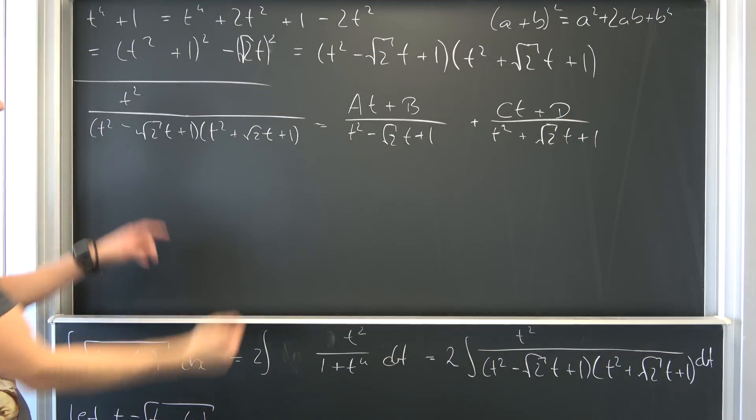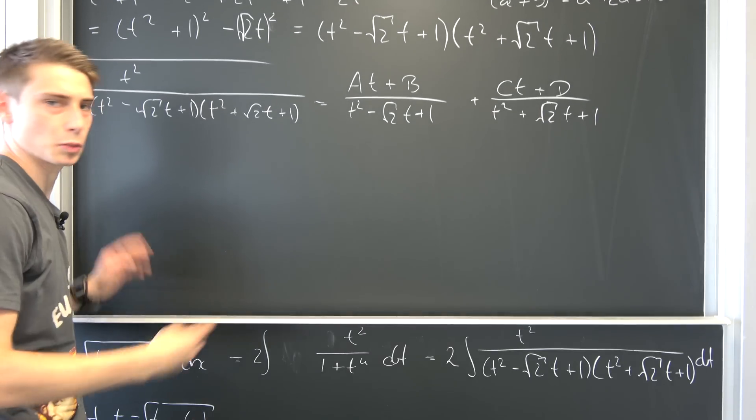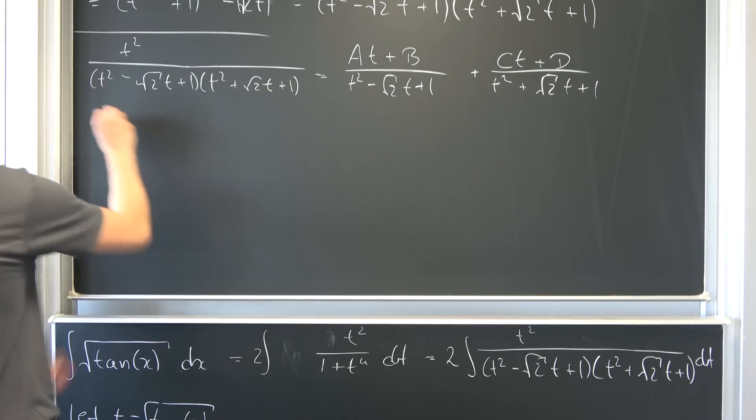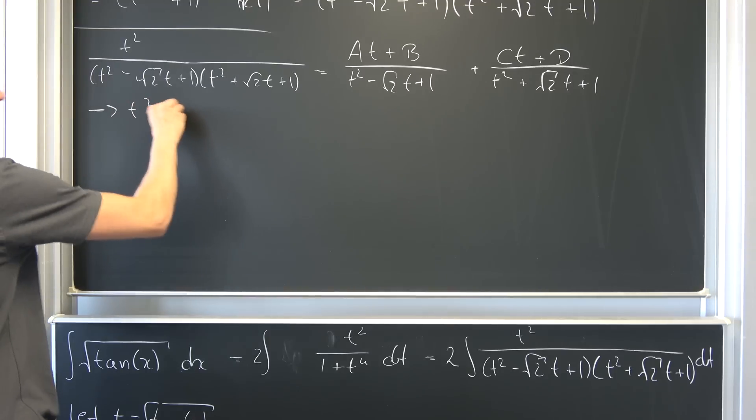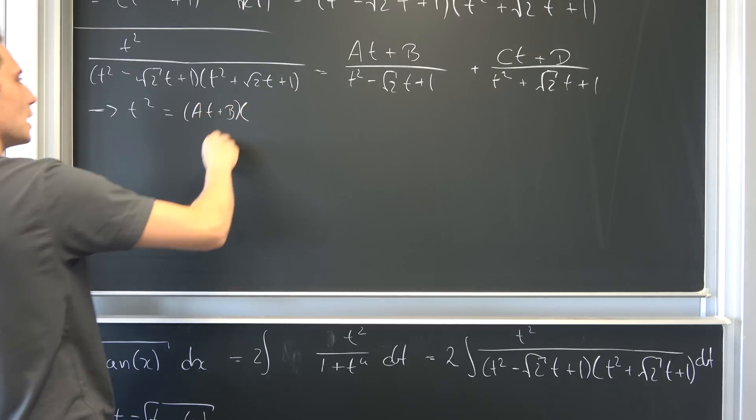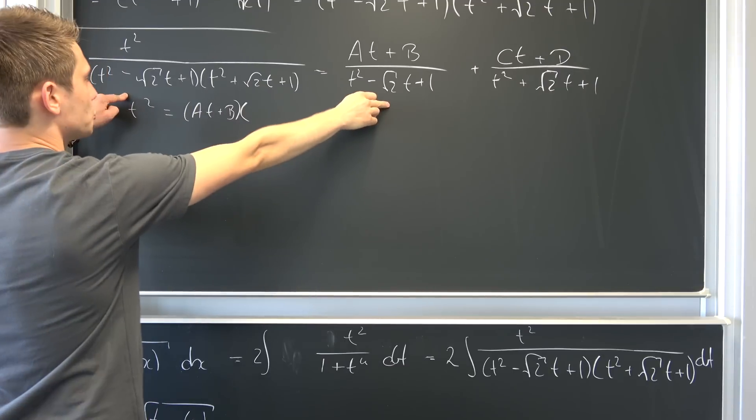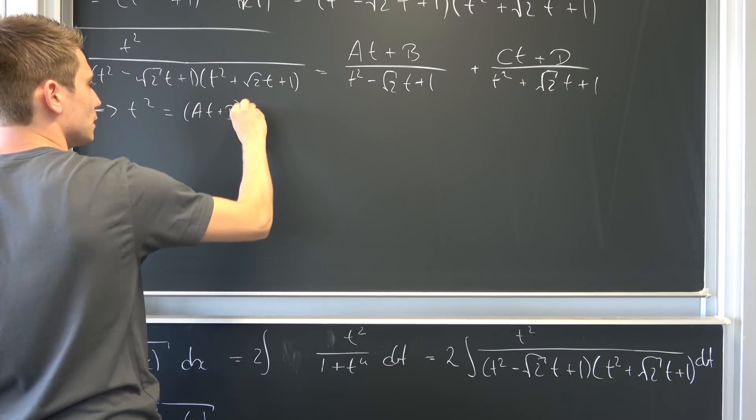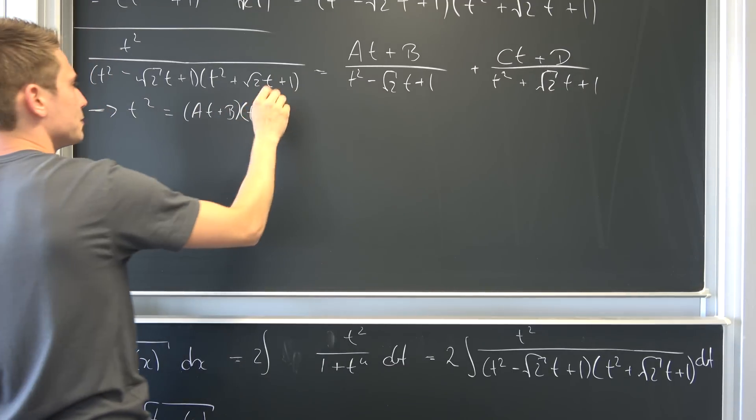And what we can do now, we can multiply both sides by this big denominator. We don't want it to be equal to 0. So it also means that t squared is nothing but, now we have, oh goodness, at plus b times. So this and that is going to cancel out to 1. So we end up with this as the factor multiplying by this at plus b.